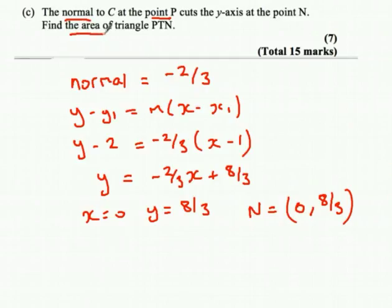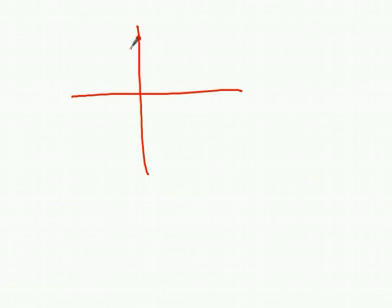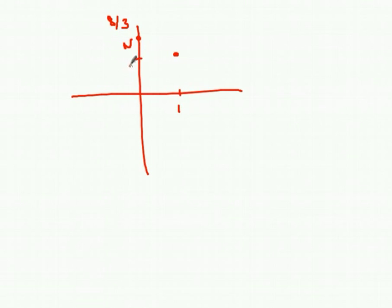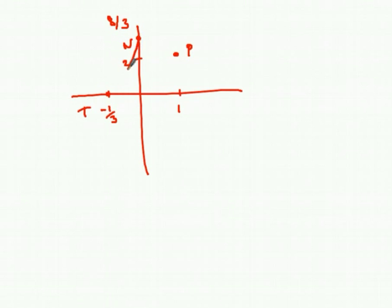We now need to find the area of the triangle P, T, N. The best way is to do a little sketch. N is at 8 thirds on the y-axis, P is at (1, 2), and T is at minus 1 third on the x-axis. Because the normal and tangent are perpendicular, there is a right angle at P. So the area is half times the distance PT times the distance PN.